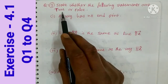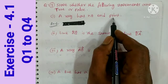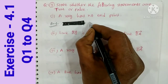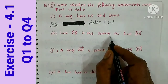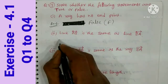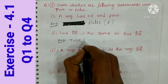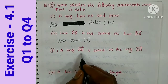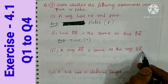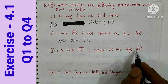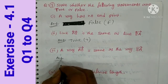Question 3: whether the following statements are true or false. First: a ray has no endpoints — False, because a ray has one endpoint. Second: line AB is the same as line BA — True, both are the same line. Third: ray AB is the same as ray BA — False, because ray AB goes from A to B, while ray BA goes in the opposite direction, so they are different.